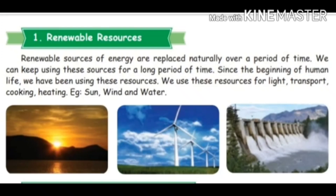Renewable resources of energy are replaced naturally over a period of time. Even if we are using these sources for a long period of time, they won't get empty — we get them again and again. We use these resources for light, transport, cooking, and heating. For example: sun, wind, and water.